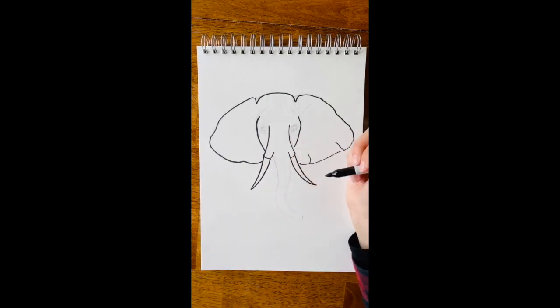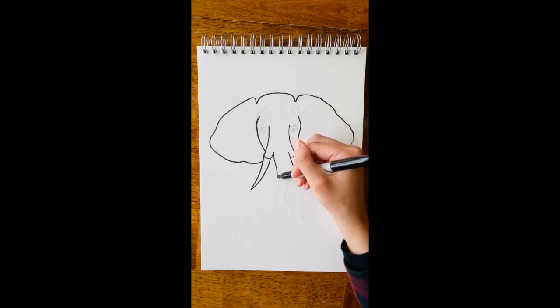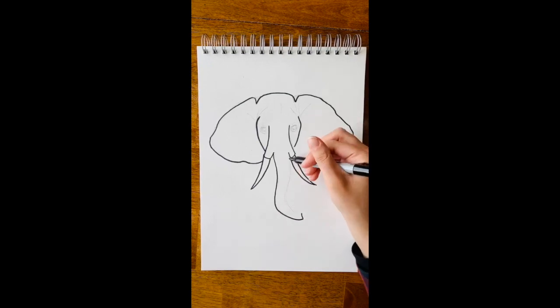And now we're going to do the trunk. So a nice kind of squiggle line. It's a little bit wider at the top. And then as you're working your way down, it's going to get a little bit narrower. And then you're going to connect the two ends together.